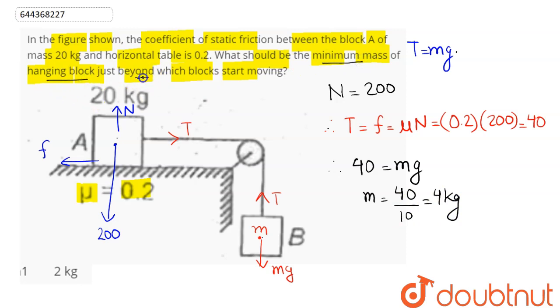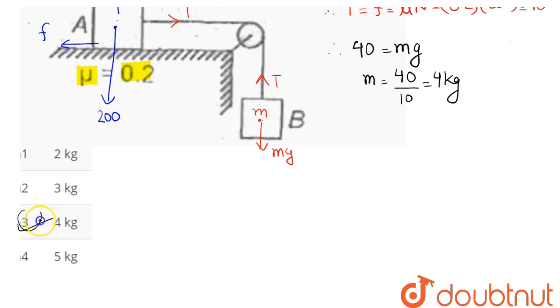Hence, amongst the four options, we can say here that 4 kg mass must be the mass of the hanging body so that the system does not move. That is, option number 3 is the correct answer, hence 3 is our answer.